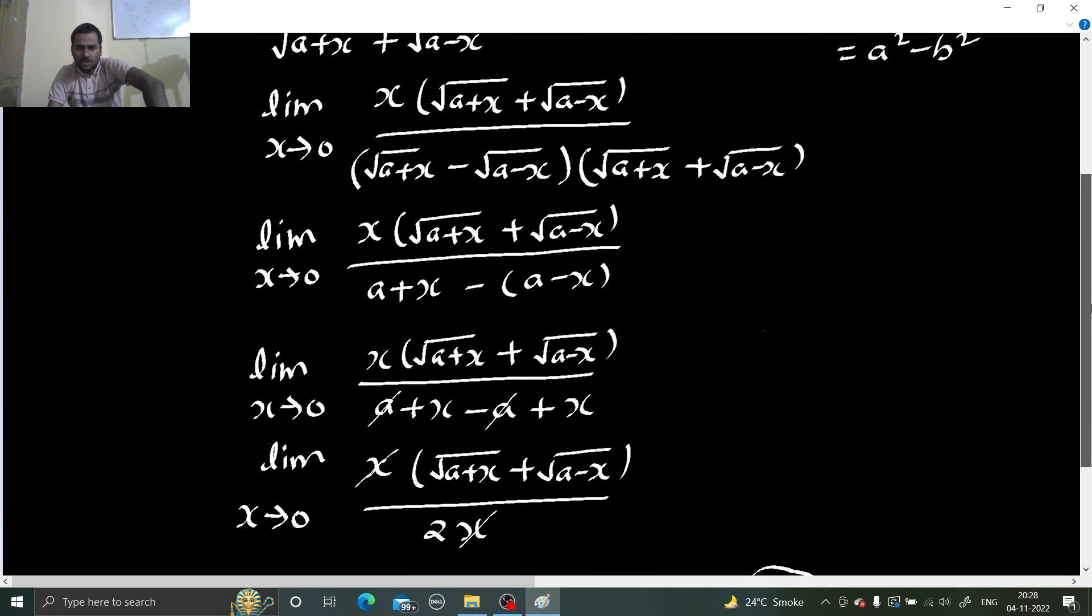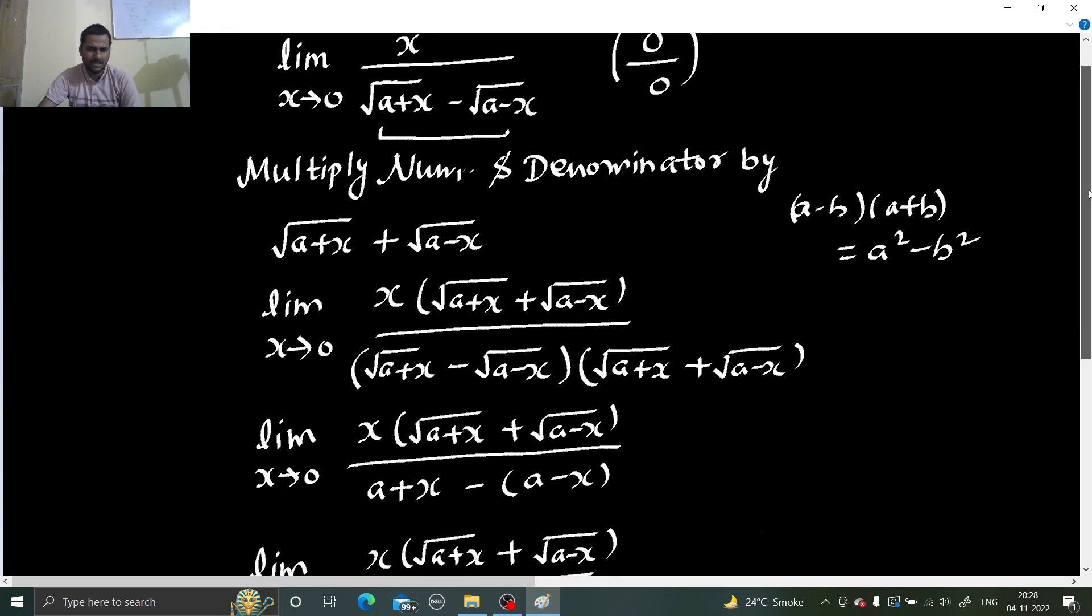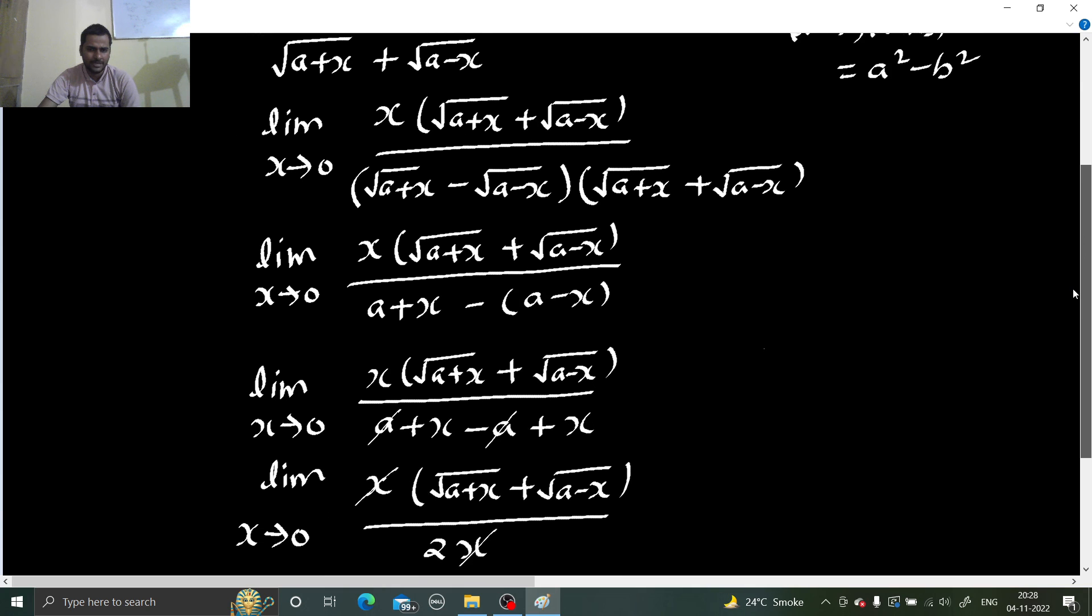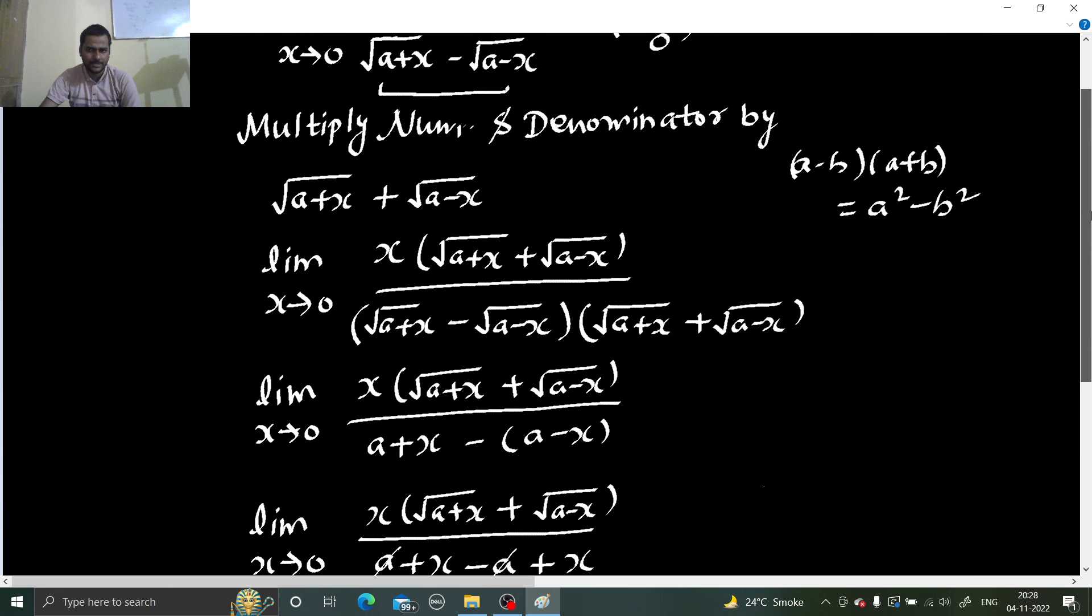So I don't think any sort of confusion was there. Just the basic idea of rationalization was there which you all need to understand in order to solve the limits problem. You need to understand because this is a very fundamental step. Just rationalize by multiplying by conjugate in numerator and denominator. I hope you understood the way we solved this problem.